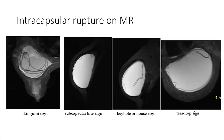Here are some examples of intracapsular rupture on MRI. This is a classic linguine sign, where we see these strips of the intracapsular polymer floating like linguine floating in water on the MRI, and these tend to settle dependently. This is the subcapsular line sign — we have the dark T1 fibrous capsule and the lighter black silicone polymer capsule, and we can see silicone on both sides of it. We can also see it smaller and more subtle down here.